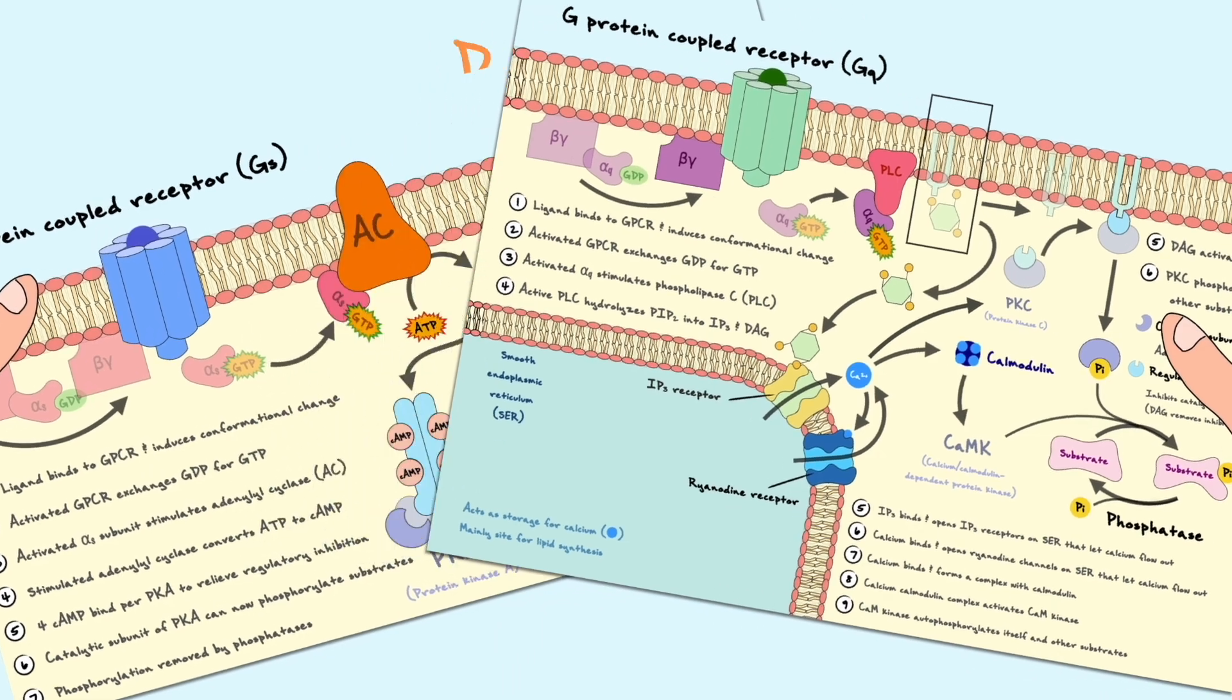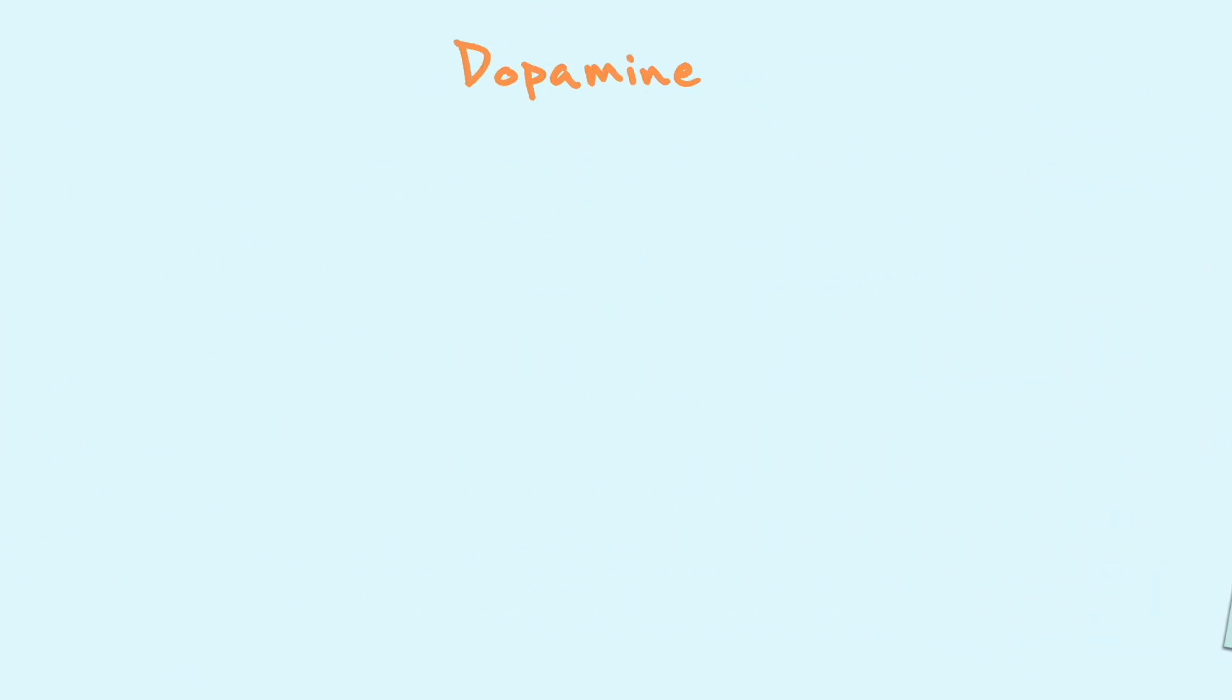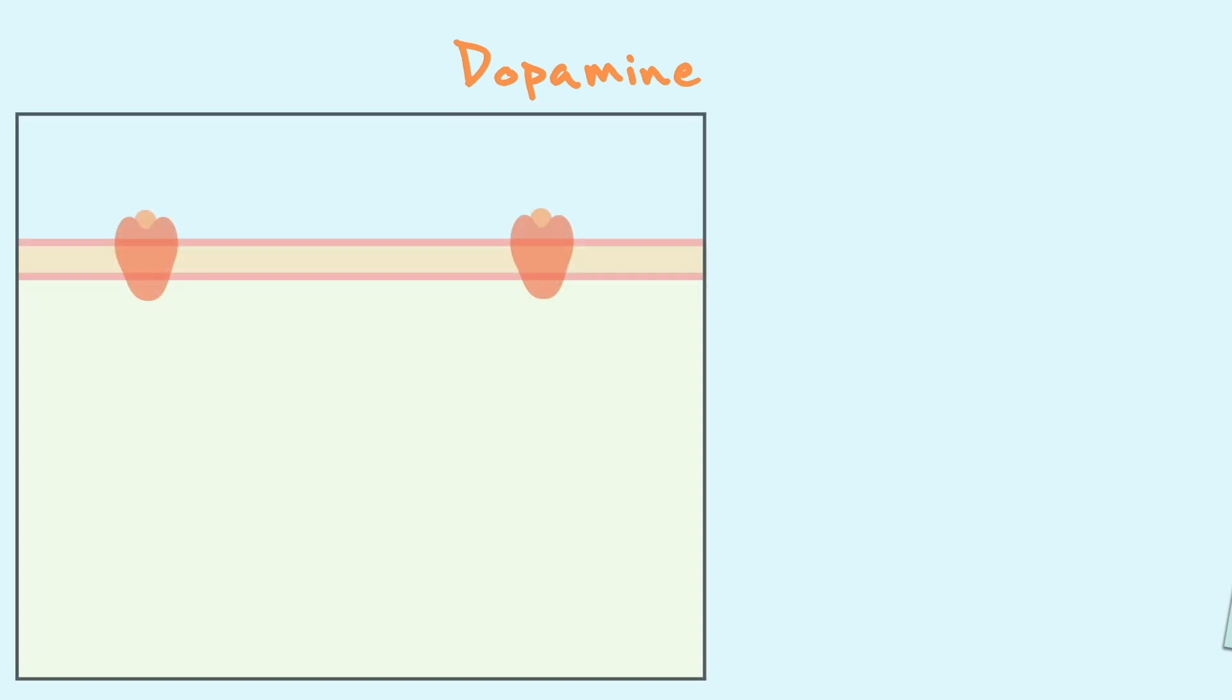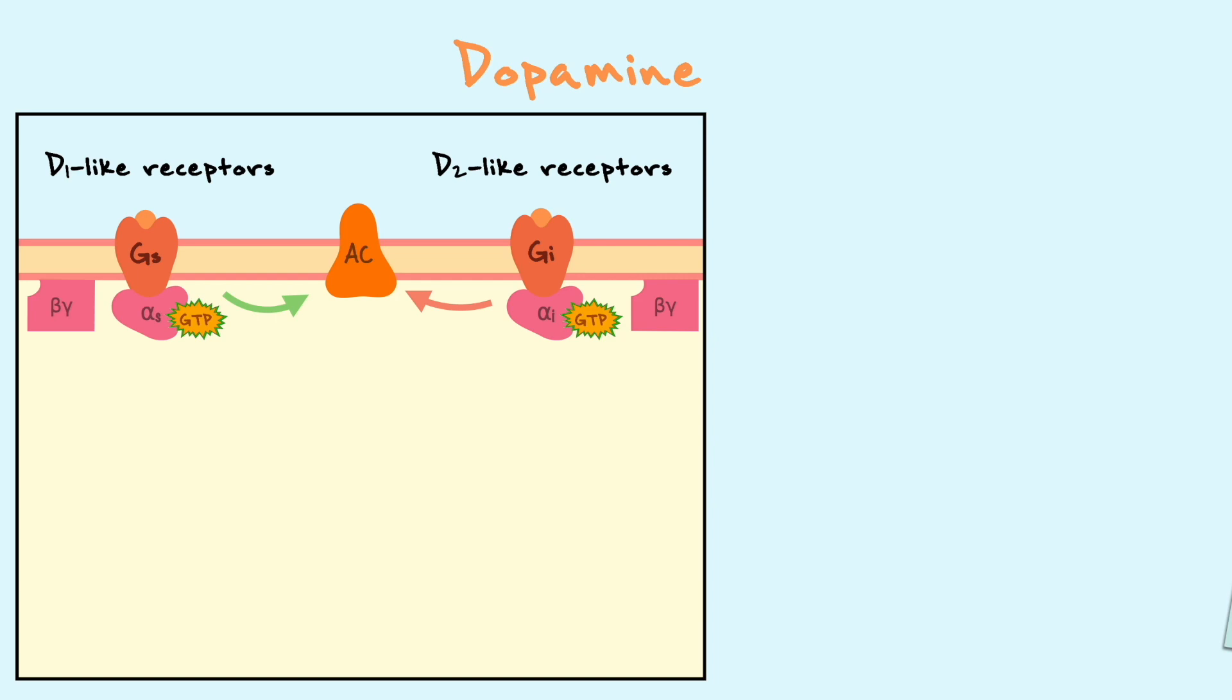Starting with dopamine, it turns out that when dopamine is released in the synaptic cleft, dopamine only likes to bind to metabotropic receptors. There are two main categories of dopamine receptors, the D1-like and the D2-like receptors. D1-like receptors mediate the Gs pathway and the D2 receptors mediate the Gi pathway. To quickly summarize the two pathways, the Gs pathway leads to the activation of adenylyl cyclase, whereas the Gi pathway leads to the inhibition of adenylyl cyclase.